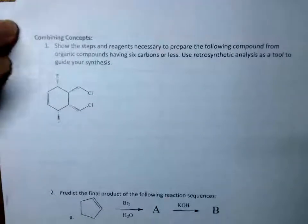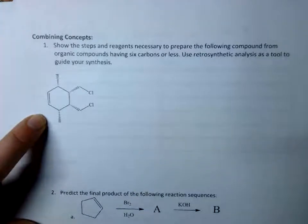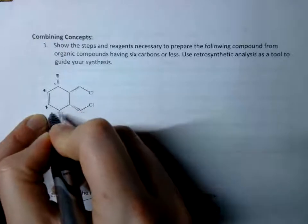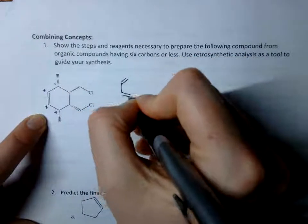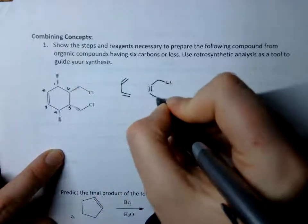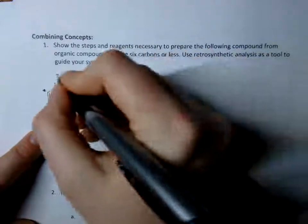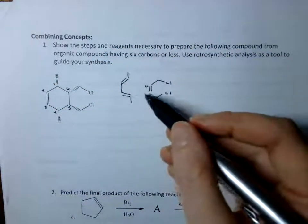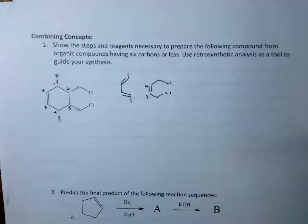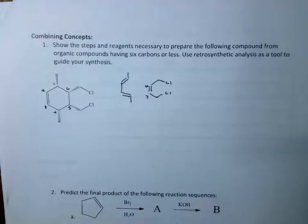Next question: show the steps and reagents necessary to prepare the following from organic compounds with six carbons or less. Again, this is a Diels-Alder. I'm going to look at this double bond and assume that was the diene. Then carbons 5 and 6 are the dienophile. I have them pointed the same way because stereochemistry is retained, and I need my methyl groups on there. If I reacted that forward, that would get me the product I want.